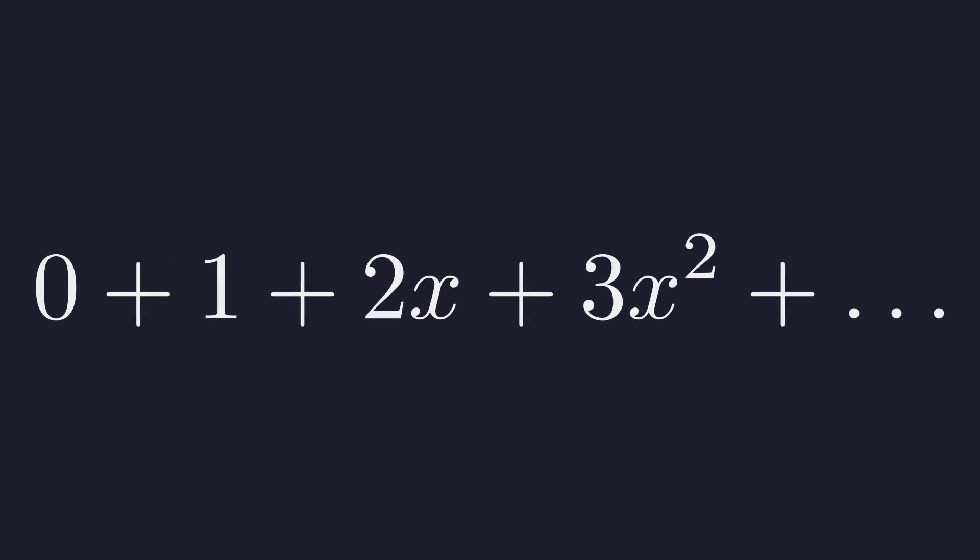The derivative of the constant 1 is 0. The derivative of x is 1. The derivative of x squared is 2x, and so on. Now, we can express this new series back in summation notation.